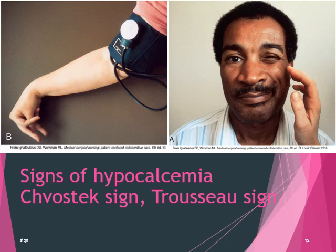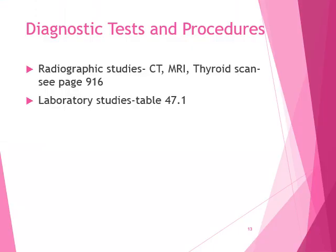Here's a picture: signs of hypocalcemia — the Chvostek sign and the Trousseau sign. Chvostek is the face twitch. Trousseau is the blood pressure cuff sign. Now let's look at some diagnostic tests and procedures that are important. This is introduction, so I'm just introducing some basics right now, and I'll get into the diseases in the next chapter.